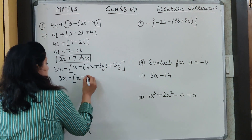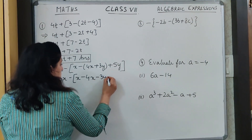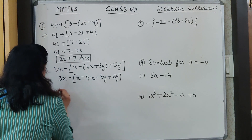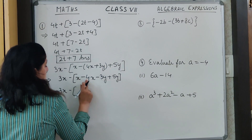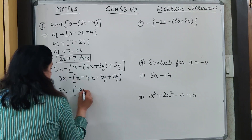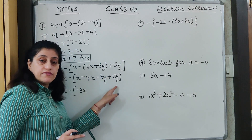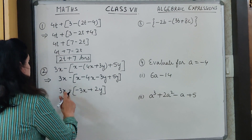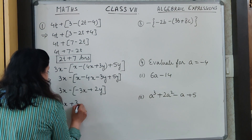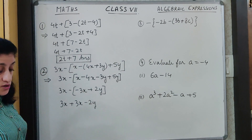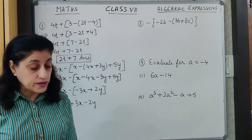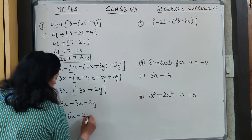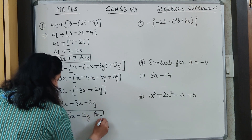The minus sign will change the inside signs, giving minus 4x minus 3y plus 5y. Now all four terms are in one bracket — we can solve them. Minus 4x gives minus 3x combined with the outer 3x... wait — minus 3y plus 5y gives 2y. Opening the next bracket, there is a minus sign outside, so inside signs change. I get 3x plus 3x minus 2y. Now 3x plus 3x makes 6x minus 2y.